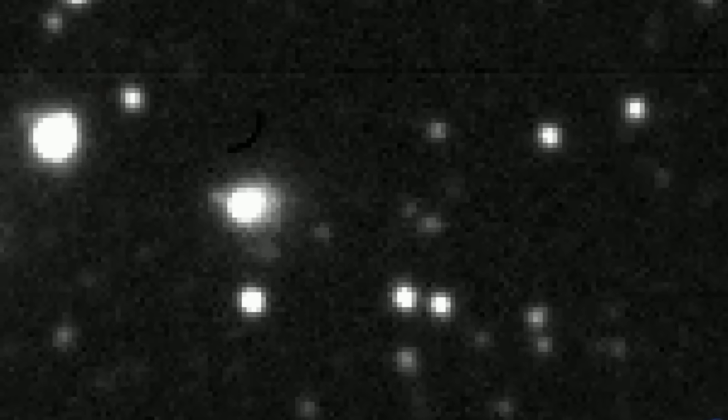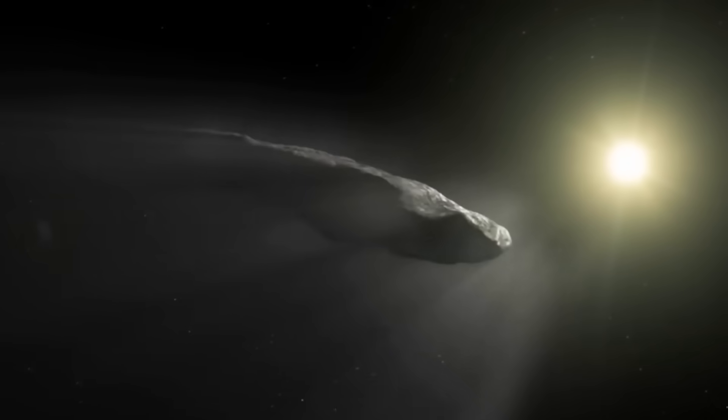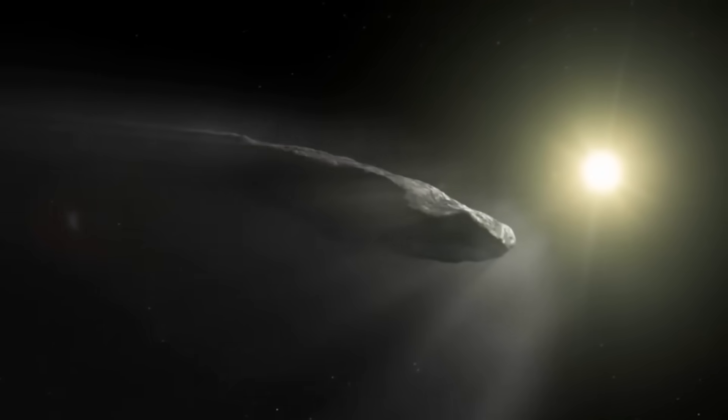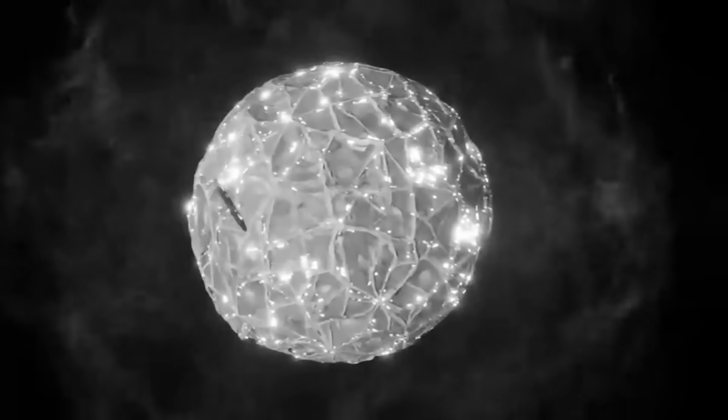The photographs clearly showed a distinct coma of gas and dust surrounding the nucleus, along with a visible tail streaming away from the Sun. This was definitive proof. 3i Atlas is an active comet.